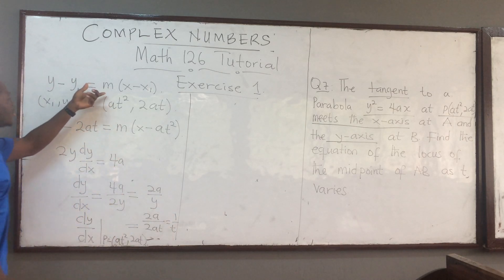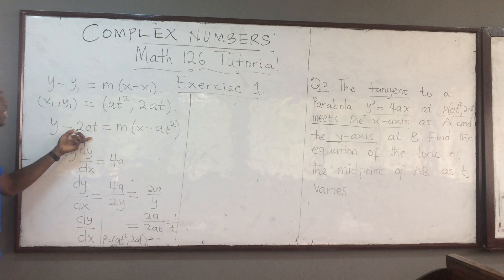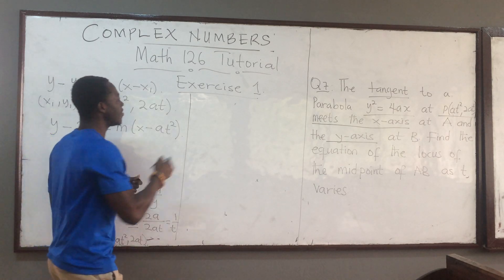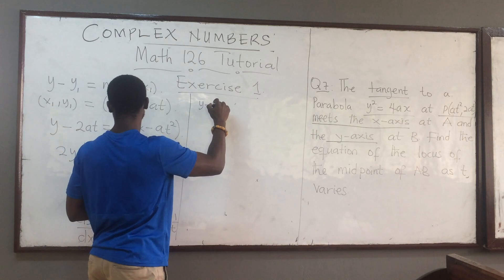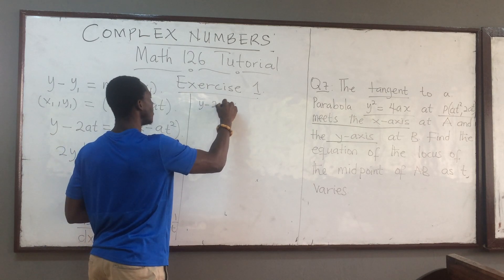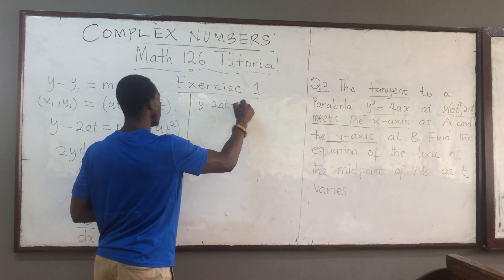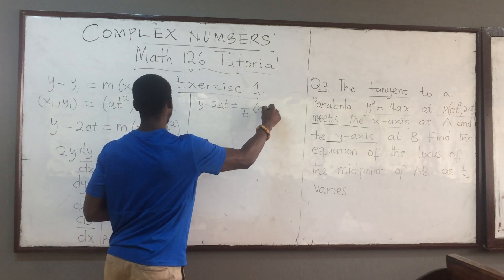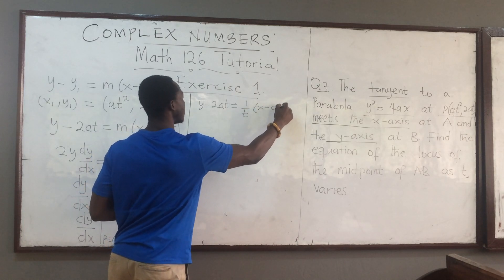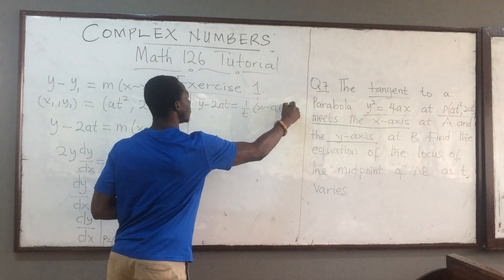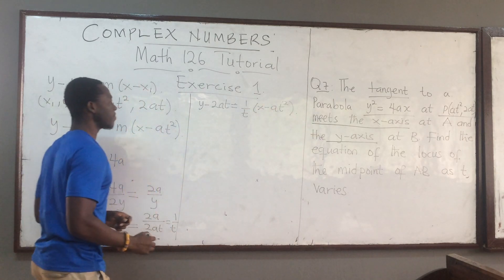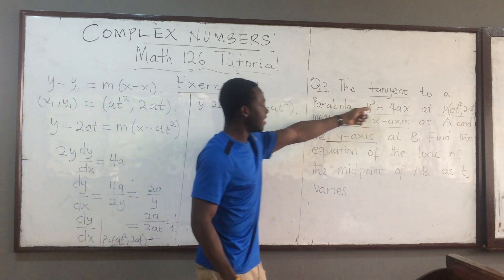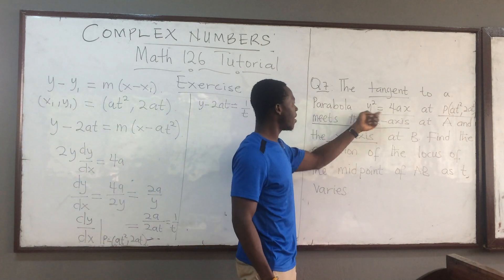Substituting that into the equation, we have y − 2at = (1/t)(x − at²). That is the equation of the tangent to the parabola.